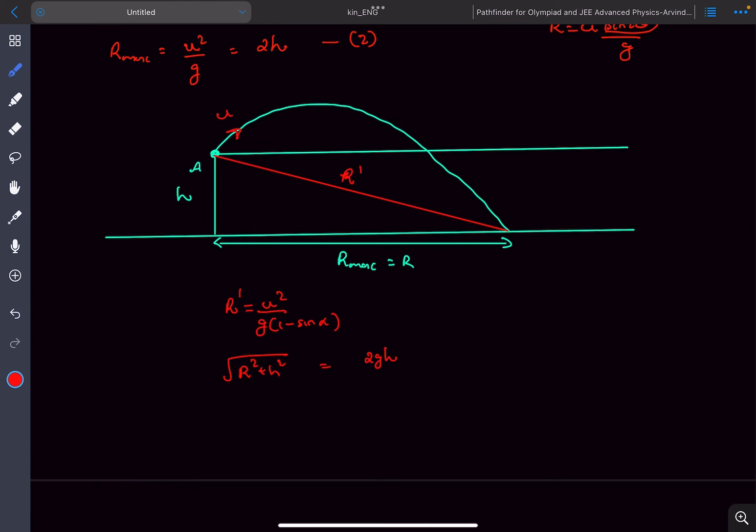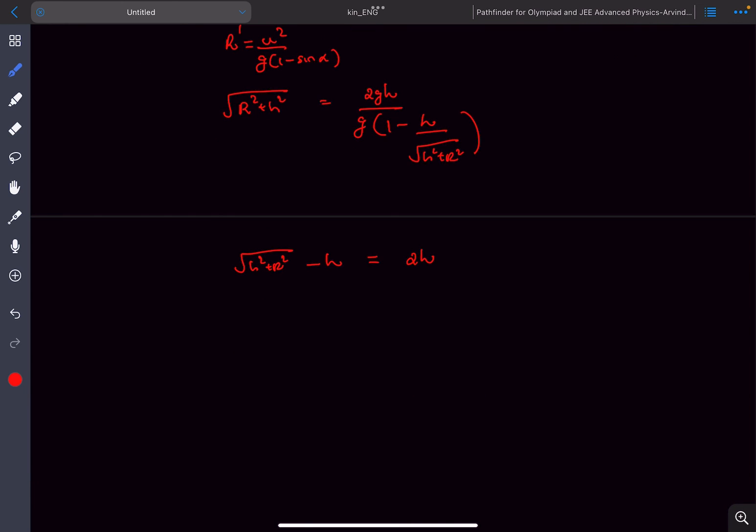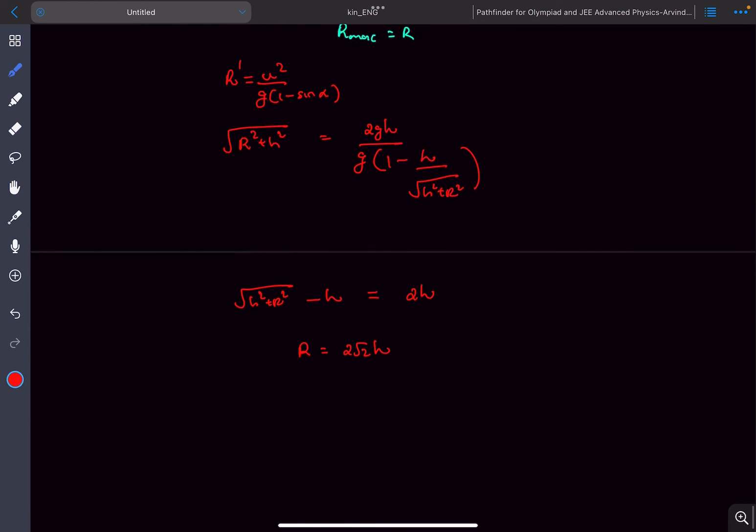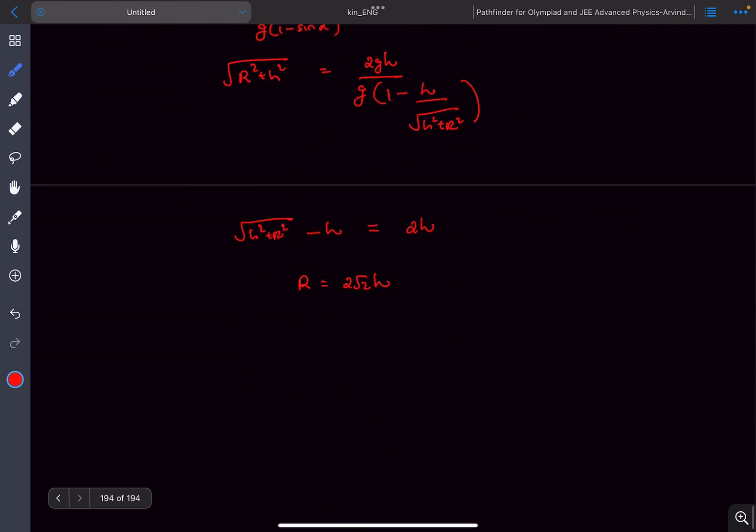Now α is the angle of the incline. As you can see from the triangle, the value of sin α is h/√(h² + r²). From here you'll get the value of the new range to be 2√2 times h.